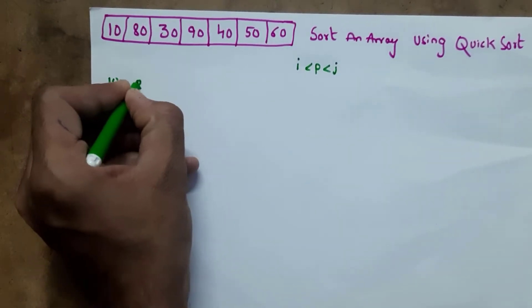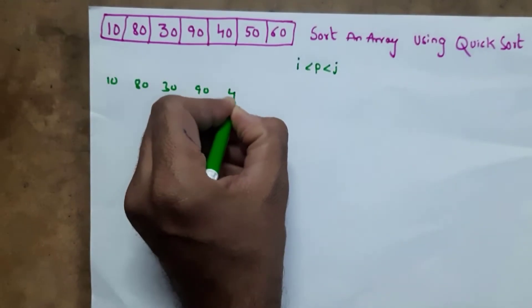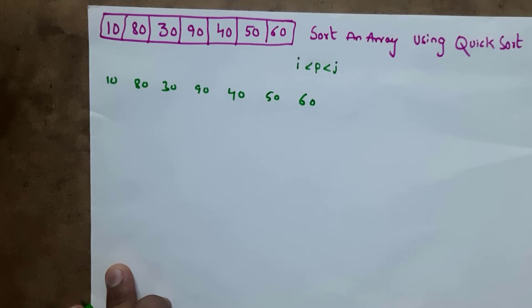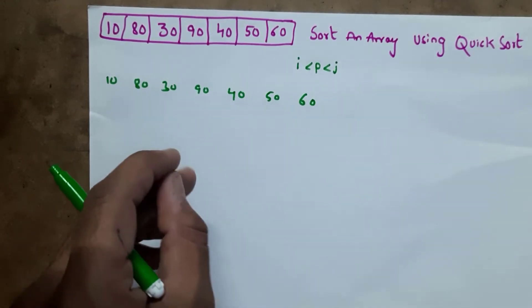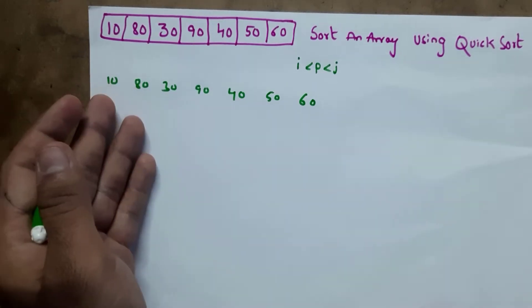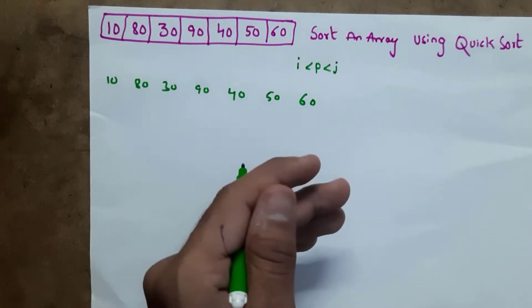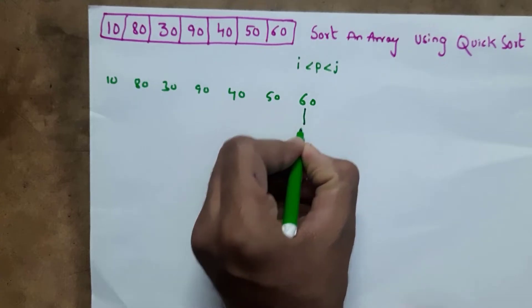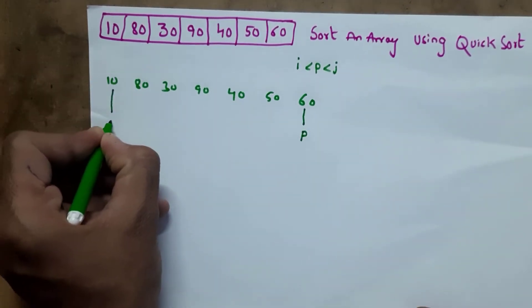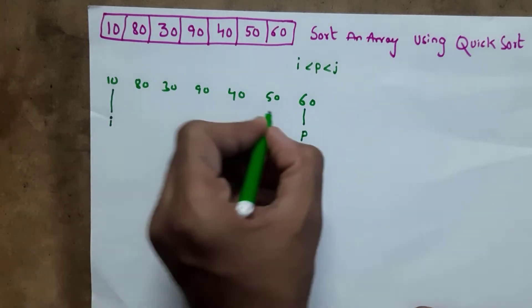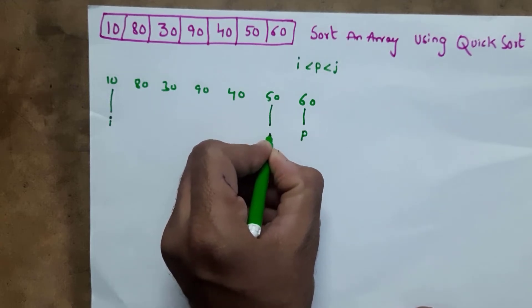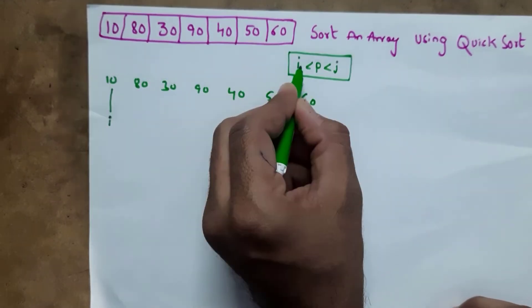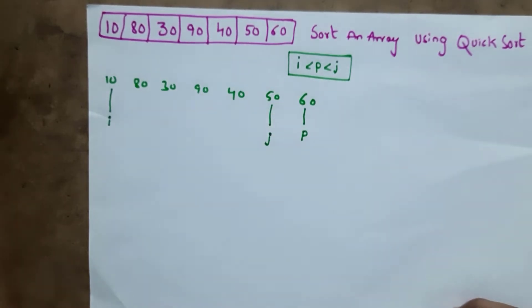The example array is: 10, 80, 30, 90, 40, 50, and 60 — total seven elements. There is no strict rule that you must select only a specific element as pivot. You can select the first element, middle element, or last element as pivot. Here, I am selecting the last element as pivot, and the first element as i and the last element as j. The rule: i must be smaller than pivot and j must be larger than pivot.